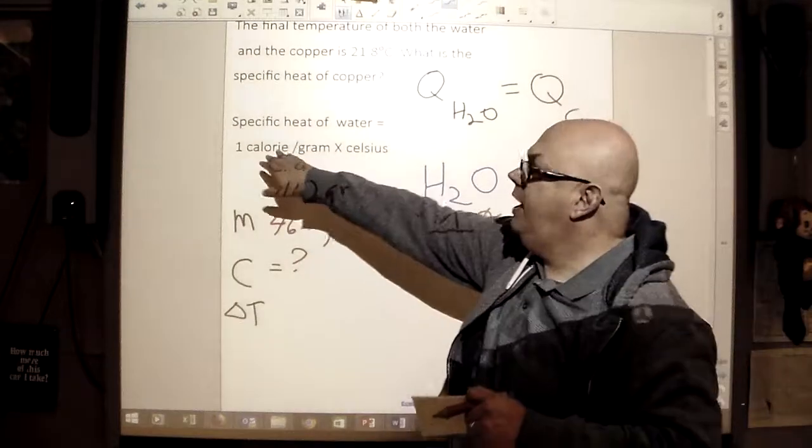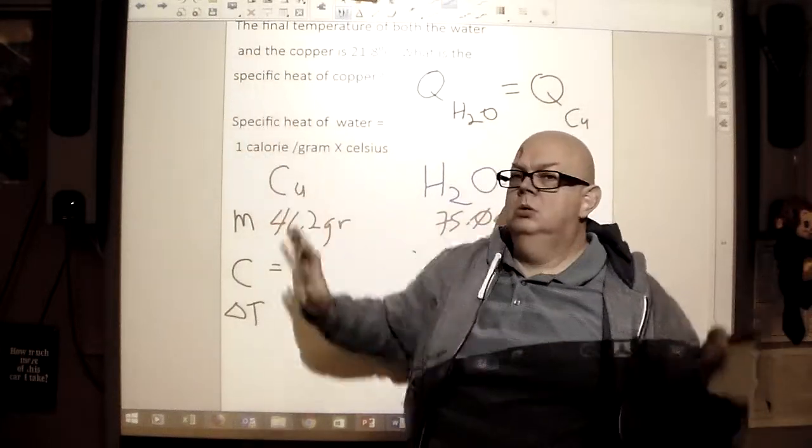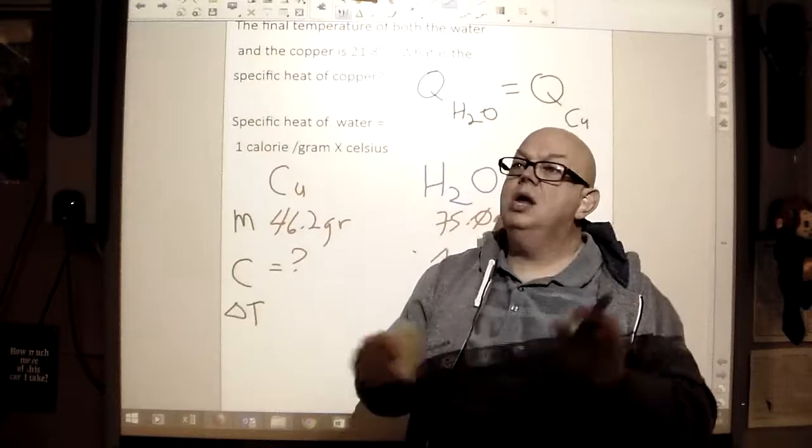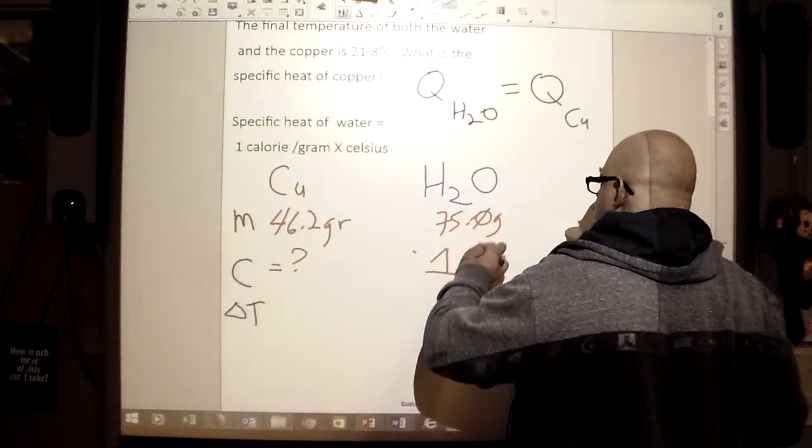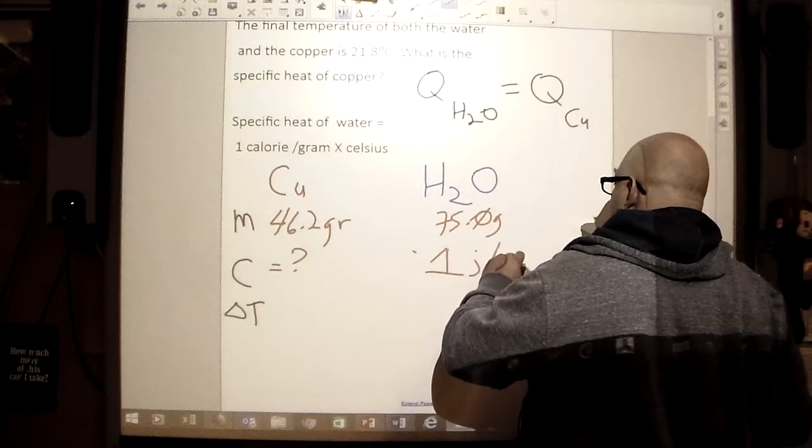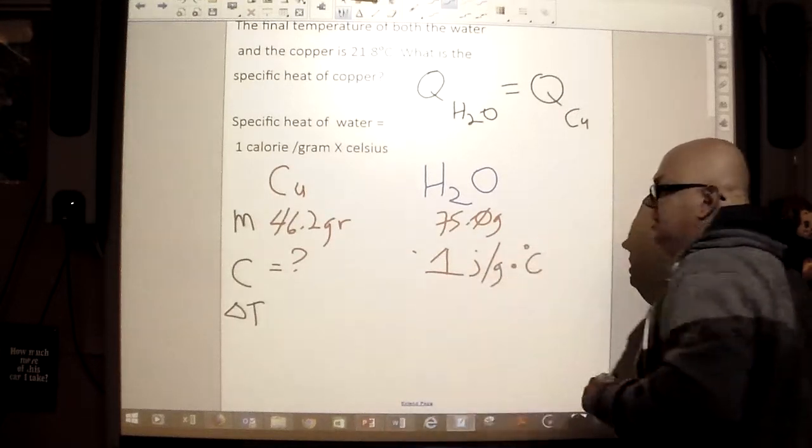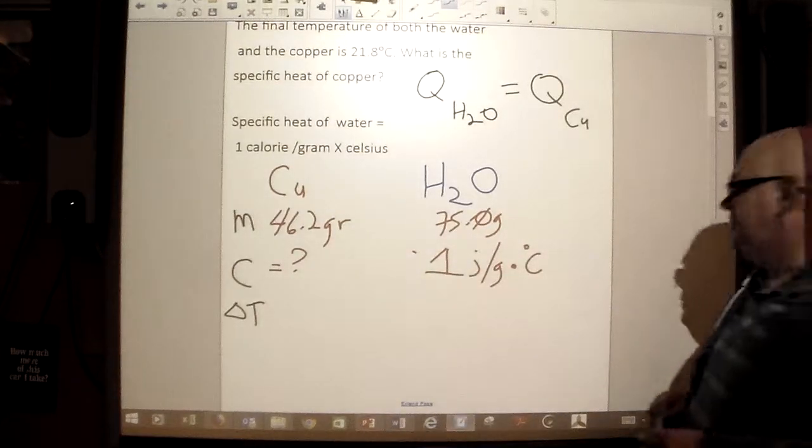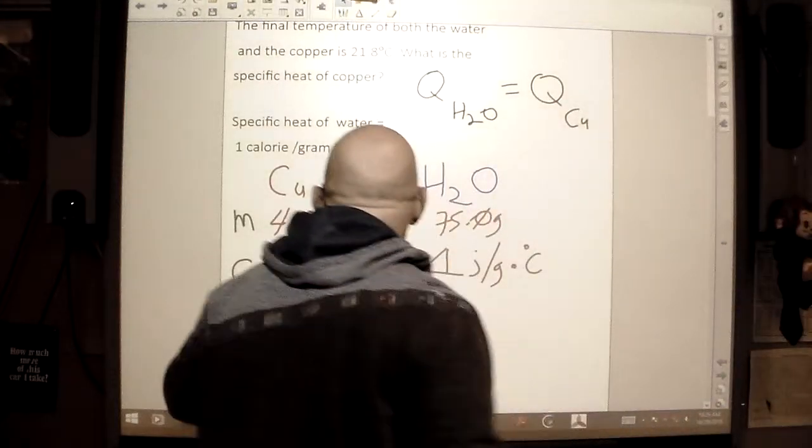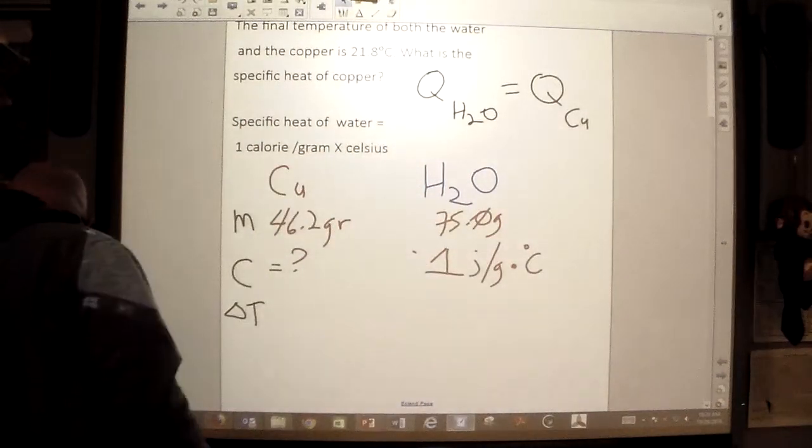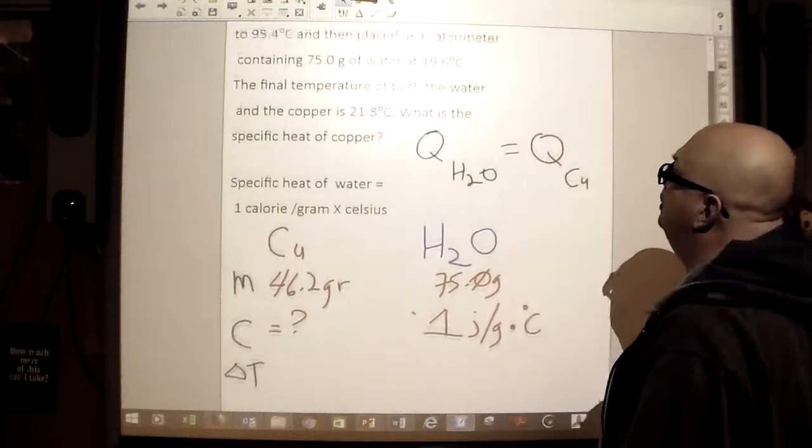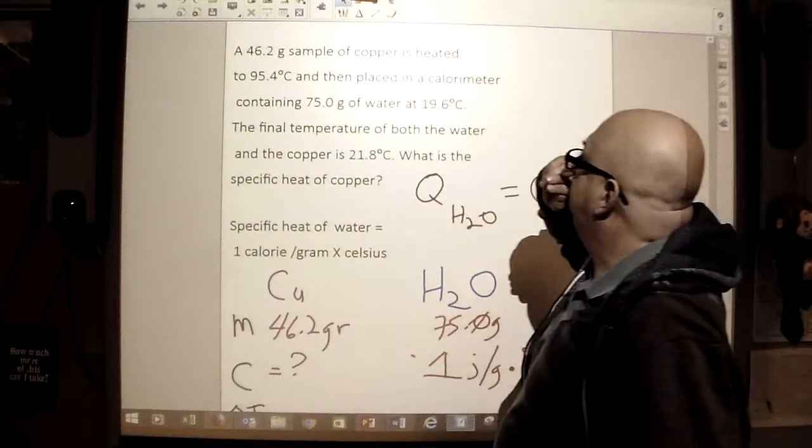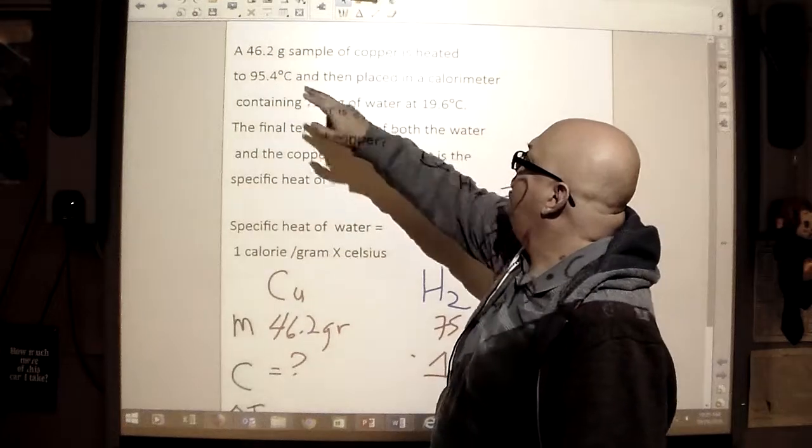A calorie is the same as a joule, and it's a small c calorie, not to compare to the big C calories, so we'll say one joule per gram multiplied by degrees Celsius. And then we have to look at our delta T, our delta T, delta T, delta T. Oops, dropped my calculator.